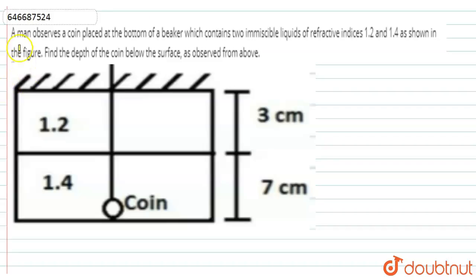Hi, in this question, a man observes a coin placed at the bottom of a beaker which contains two immiscible liquids of refractive indices 1.2 and 1.4 as shown in the figure. Find the depth of the coin below the surface as observed from above.